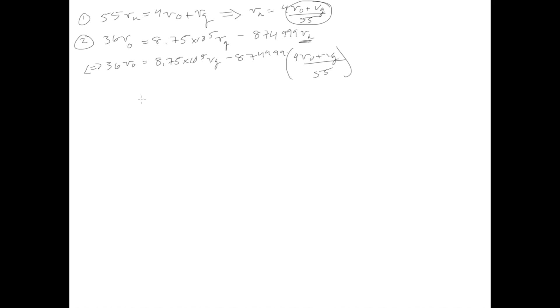So now this would just simplify down. I'm just going to write this on the other side. So we have 36V0 minus 8.75 times 10 to the 5th Vg. If you were to distribute this to all of this, you would find that it would just equal negative 6363.29V0 minus 15909.07Vg.